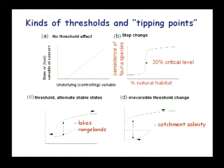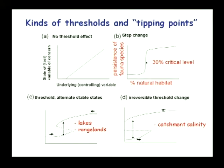The cases I'm going to spend time on are the alternate states which are reversible but with a hysteretic effect, as seen in lakes and in rangelands. And then there is the hysteretic effect where you get an irreversible change — catchment salinity falls into this category. You can increase the slow variable, which might be a rising water table, until it flips up to the salinized state. No matter how much you decrease it back again, you stay in the salinized state. That's an irreversible shift.